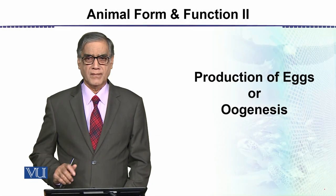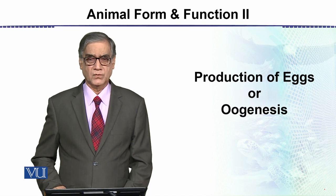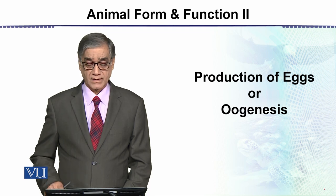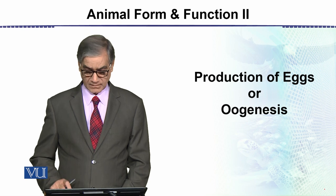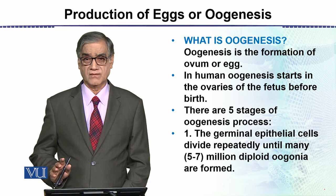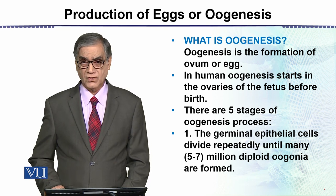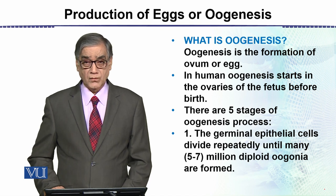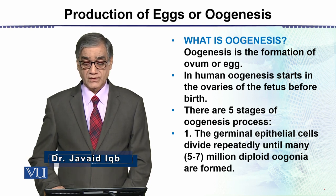Under the topic of animal form and function, we are discussing reproduction. A sub-topic of this is oogenesis — 'genesis' meaning formation. So what is oogenesis? It is the formation of eggs or ova. In human oogenesis, this process starts in the ovaries of the fetus.